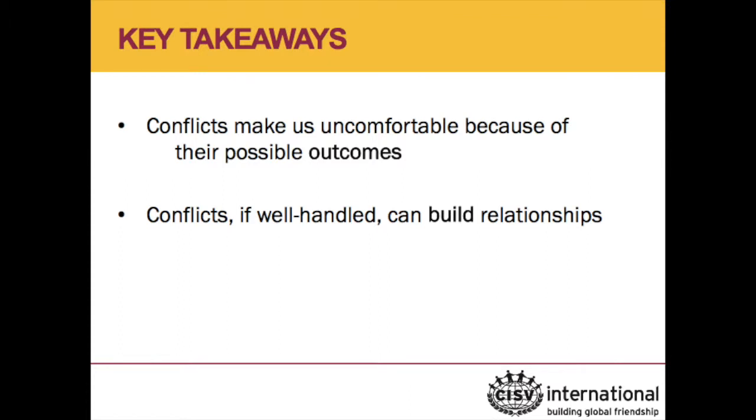There are two key takeaways that are important to point out. The first is that what we are afraid of — the negativity we associate with conflict — is actually negativity that has to do with the outcome. The reason we don't like conflict is that we are afraid of the possible outcomes, which can be very scary and uncomfortable, whether it be a bigger scale conflict of war and violence, or an interpersonal conflict where the outcome can be that we lose a friend, or in a CISV context, that we have a bad program or are unable to achieve the goals of the program.